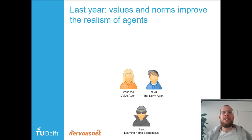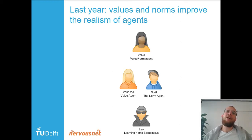Then lastly, we simulated Vada — a value and norm agent. And Vada outperforms both Vanessa and Noël. So giving the agent both values and norms made the agent even more realistic than only giving it values or only giving it norms.